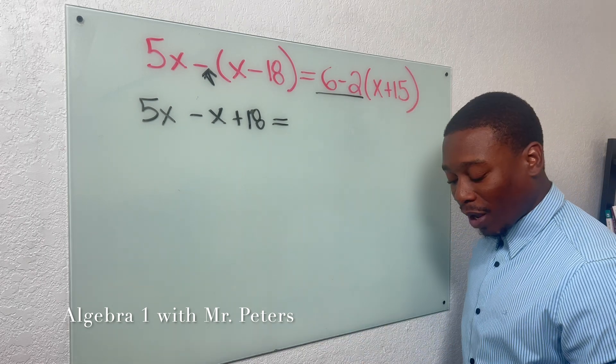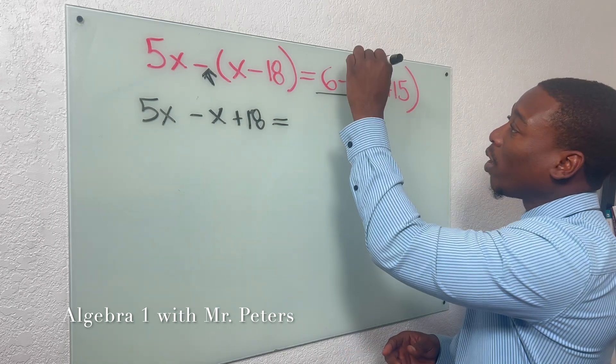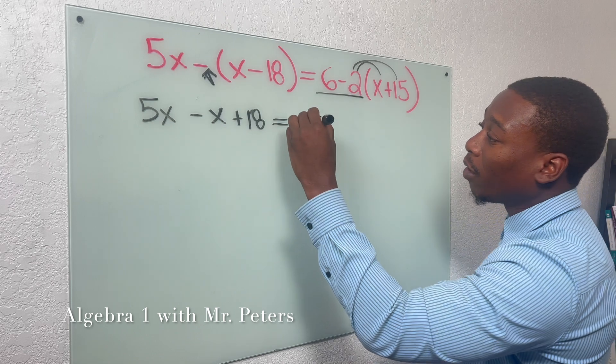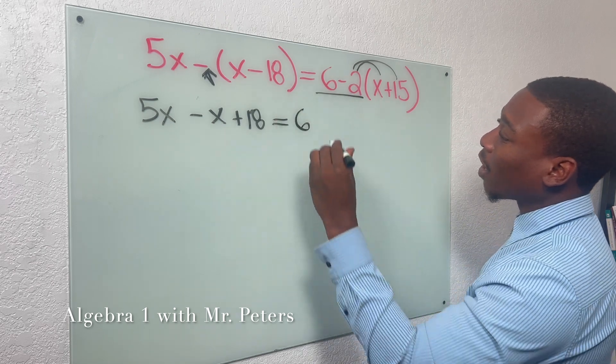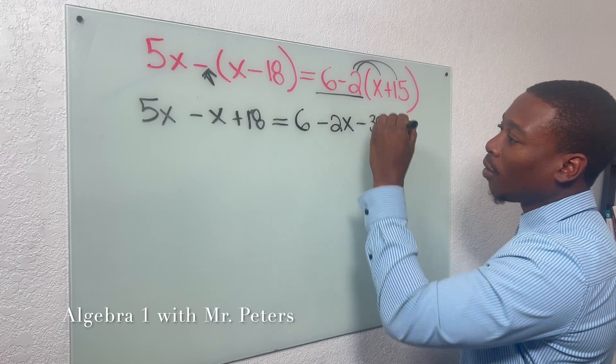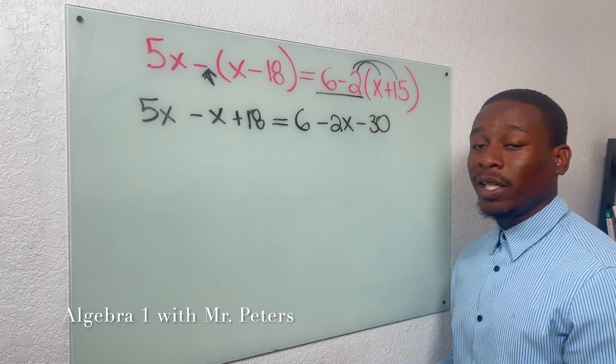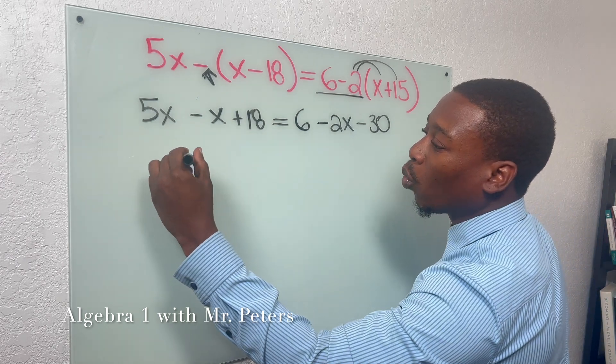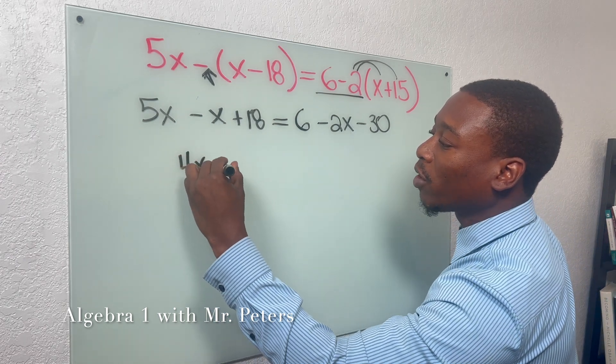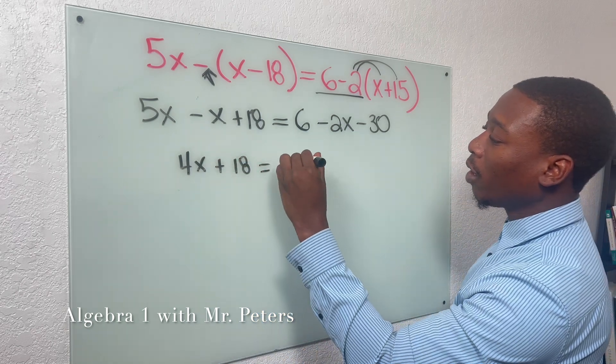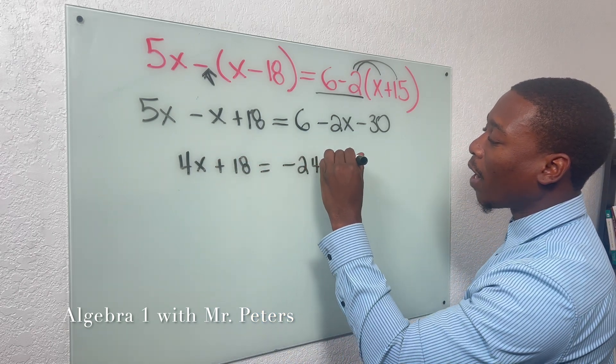Order of operations still is in place. Meaning, we need to multiply first, and yes, this 2 is negative. So 6 stays the same. We get negative 2x minus 30. Now let's start cleaning up the equation. So on the left-hand side, we have 4x plus 18 is equal to negative 24 minus 2x.